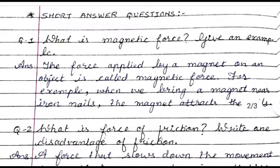Short answer questions. Question number 1: What is magnetic force? Give an example. Answer: The force applied by a magnet on an object is called magnetic force. A magnet applies its force on any object - it pulls or pushes it - and that is called magnetic force.